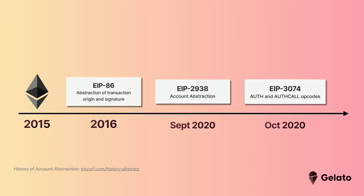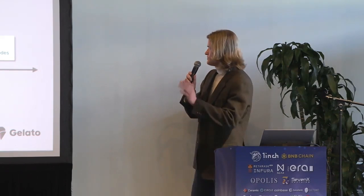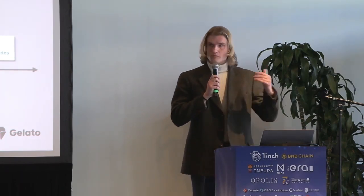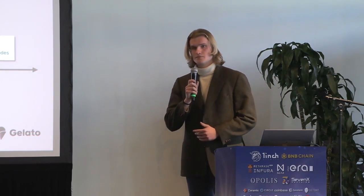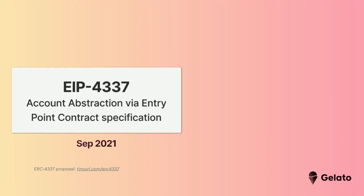Account abstraction has been on the horizon for Ethereum basically since the beginning. Ethereum was founded in 2015; by 2016 there was already a proposal. There have been many different proposals between 2016 and 2020 — check out a great article by Ismail from Argent linked there for a concise explainer. But there have been proposals upon proposals, and they're all retired now, because they all require core protocol changes.